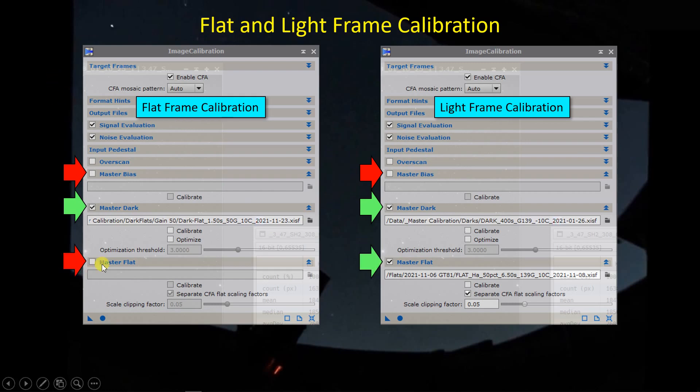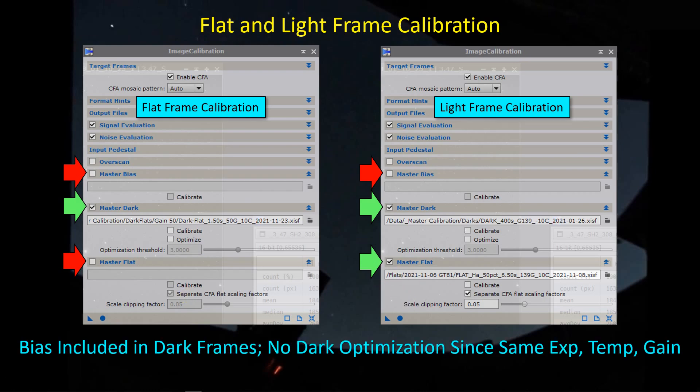Of course, when you're calibrating flat frames, there is no master flat, but in calibrating the light frames, I'm using the calibrated version of what I get over here as a master flat frame and that's what goes in here as the master flat. When I say that the bias isn't included, the bias is included in the dark frames.